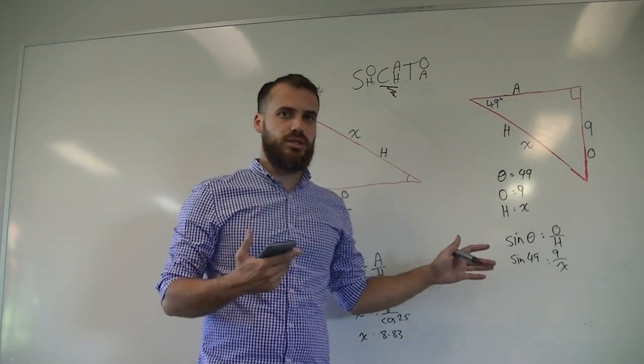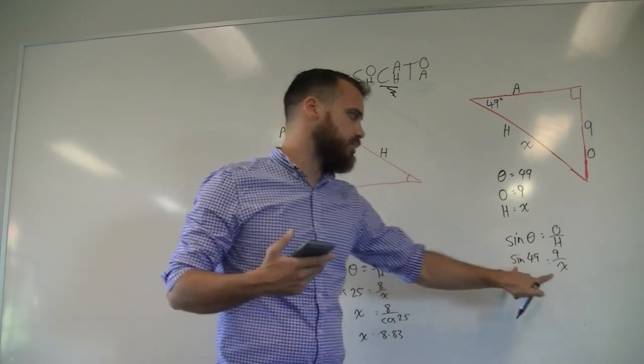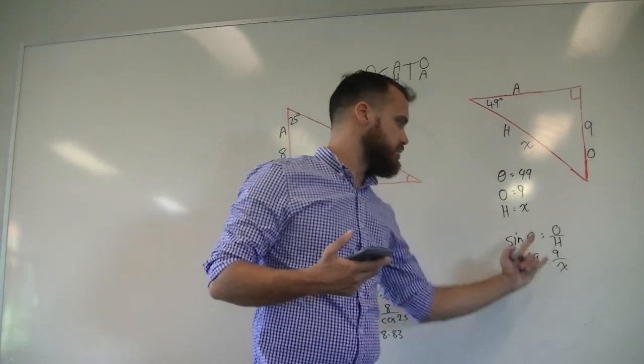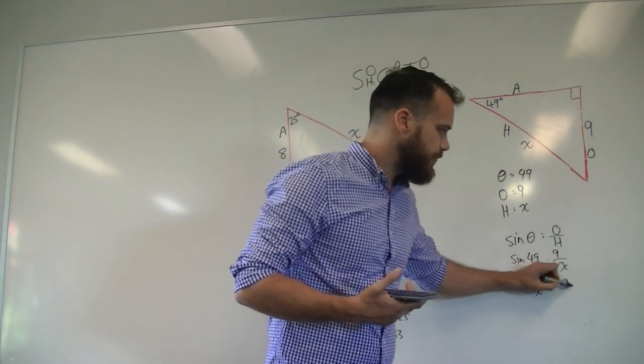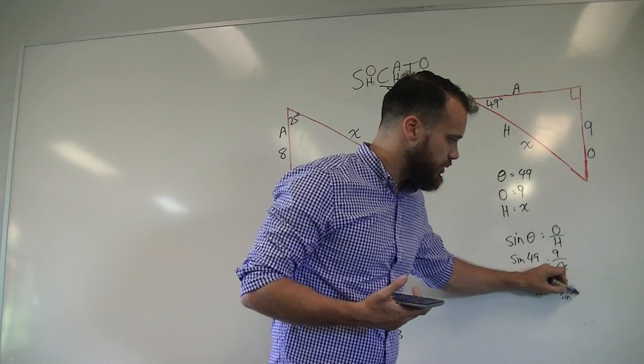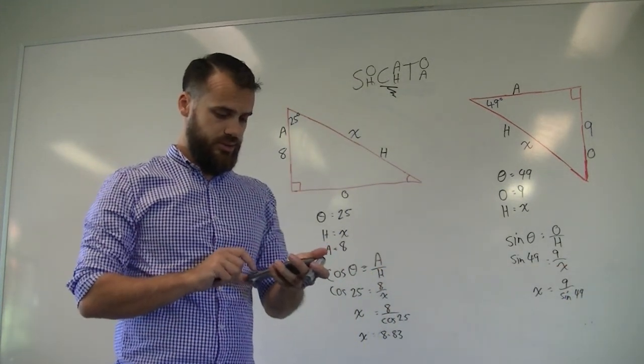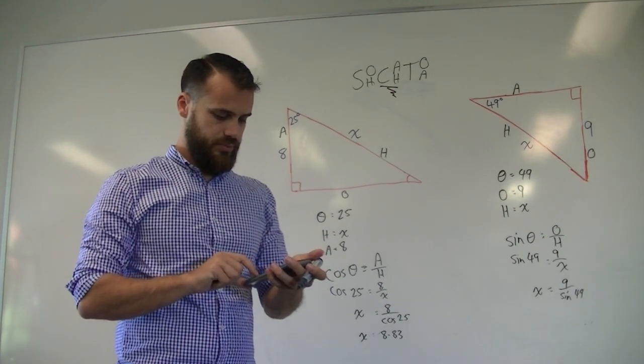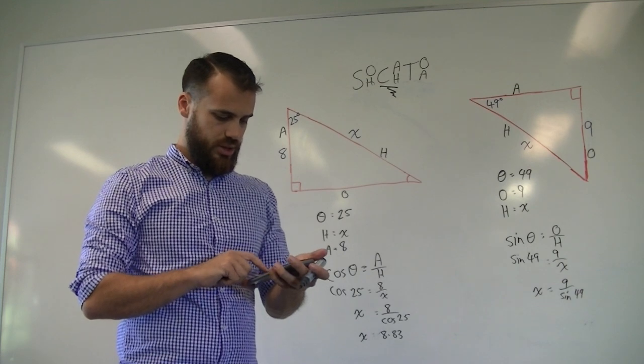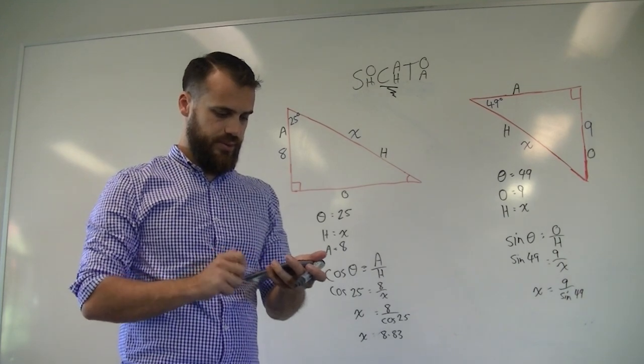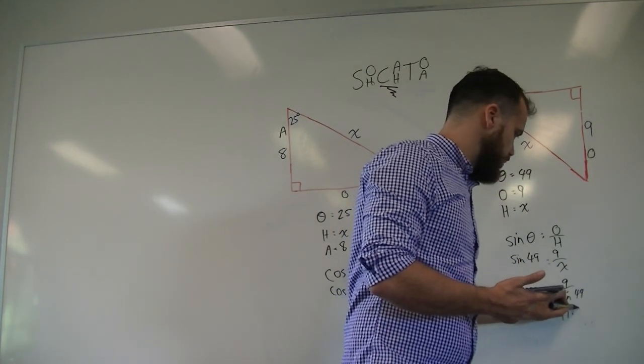Look at what kind of question it is. Is x on the top or is x on the bottom? X is on the bottom. Remember what to do when x is on the bottom. Take these two, swap them. So the x will go on this side. And the sine 49 will go on the bottom. After that, just calculate it. 9 divided by sine 49. We get an answer of 11.93.